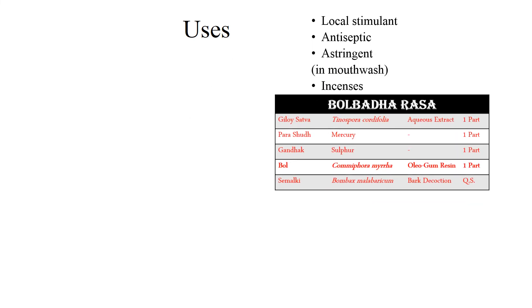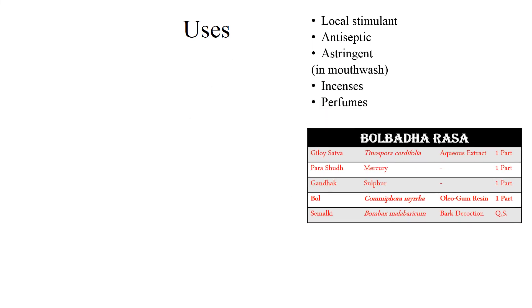Usage: Myrrh has local stimulant and antiseptic properties. It is used as an astringent in mouthwash and is used in incense and perfume. A Myrrh-containing formulation is Bal Bodhras, an Ayurvedic medicine.